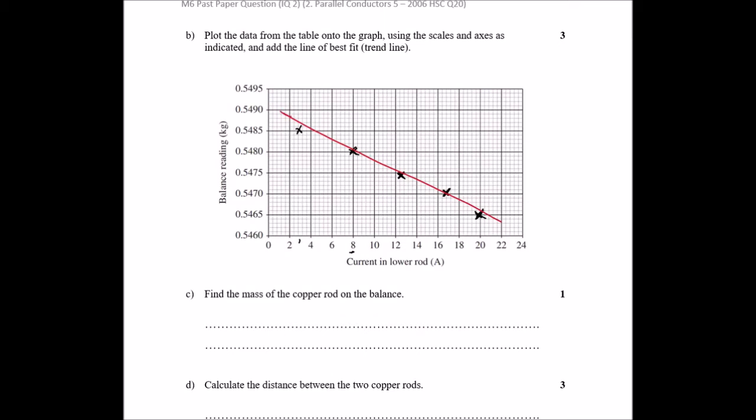Okay. And I will just kind of jot it all the way through. Okay. So question C says, find the mass of the rod on the balance. Now, the best way we're going to work this out, as you can see, as the current is increasing, our mass is decreasing, or at least the weight we record is decreasing.